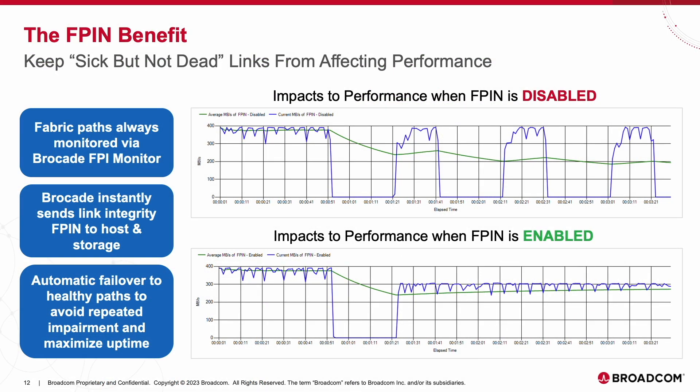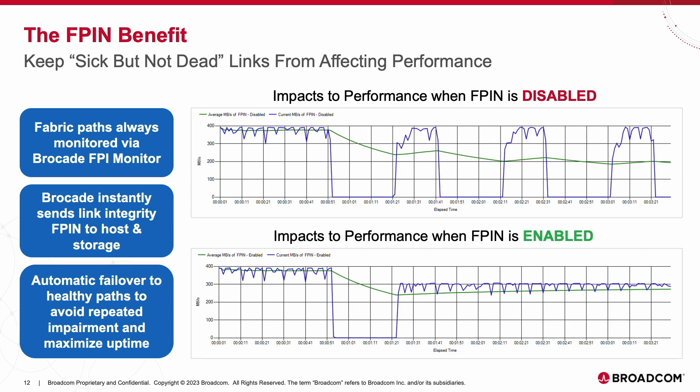So what's the benefit of making use of FPIN? In our use case, we were experiencing what's referred to as a sick but not dead link, which can go undetected due to the fact that traffic is still technically flowing and the link is not down. This causes the sawtooth behavior shown and performance will tend to suffer. When FPIN was enabled, we notice a difference in our graph — we only see a single instance of the link impairment before the Fabric captures the event and notifies end devices via FPIN. In turn, the host and array autonomously failover to a healthy path to avoid the intermittent performance issues.